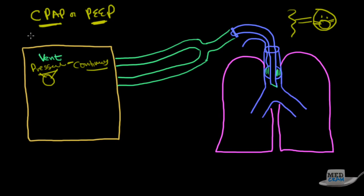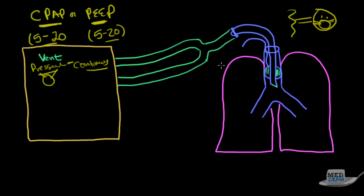You can set CPAP anywhere from 5 cm of water pressure all the way up to 20. PEEP can be anywhere from 5 to 20 as well. These pressures are present on both inspiration and specifically on exhalation.